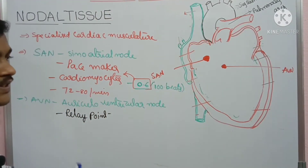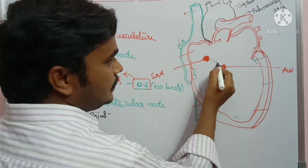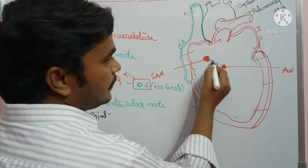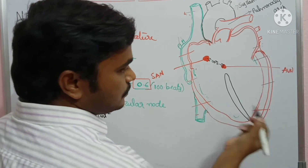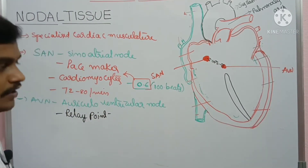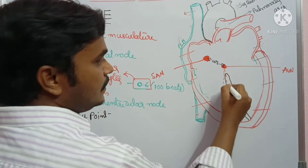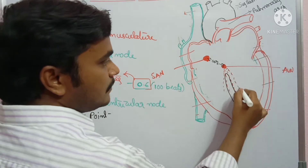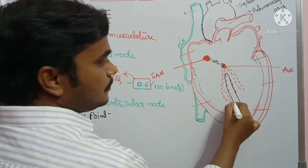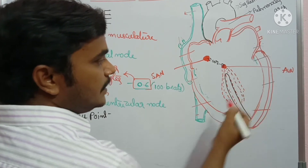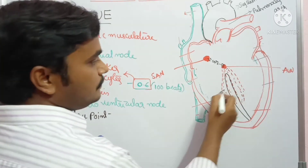From the AVN, the action potential is transmitted. On the ventricular septum, there is an atrioventricular bundle — the AVN bundle. The ventricular septum contains a structure called the bundle of His. This bundle of His is located on the ventricular septum and transmits the action potential further.